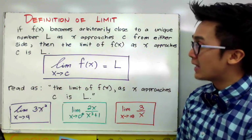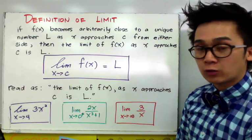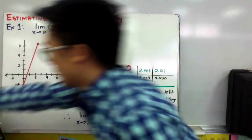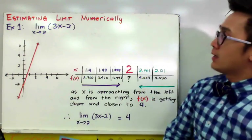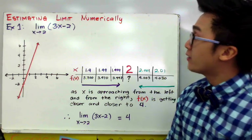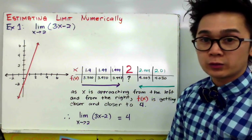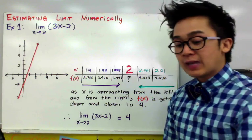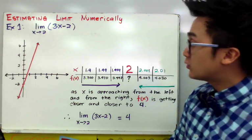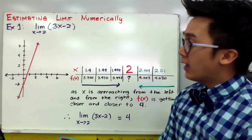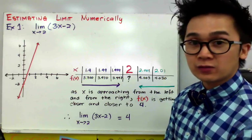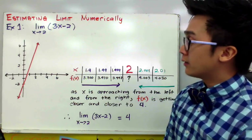Our first task is to understand limits and how to evaluate them. For this example, we're going to estimate the limit of 3X minus 2 as X approaches 2 numerically. From the definition, we need to find values getting closer and closer to C, approaching F of X from either side of the number line.